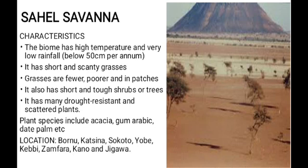The Sahel savannah can be found in Borno, Katsina, Sokoto, Yobe, Kebbi, Zamfara, Kano, and Jigawa states. The animals found in the Sahel savannah are almost the same as those of the Sudan savannah.